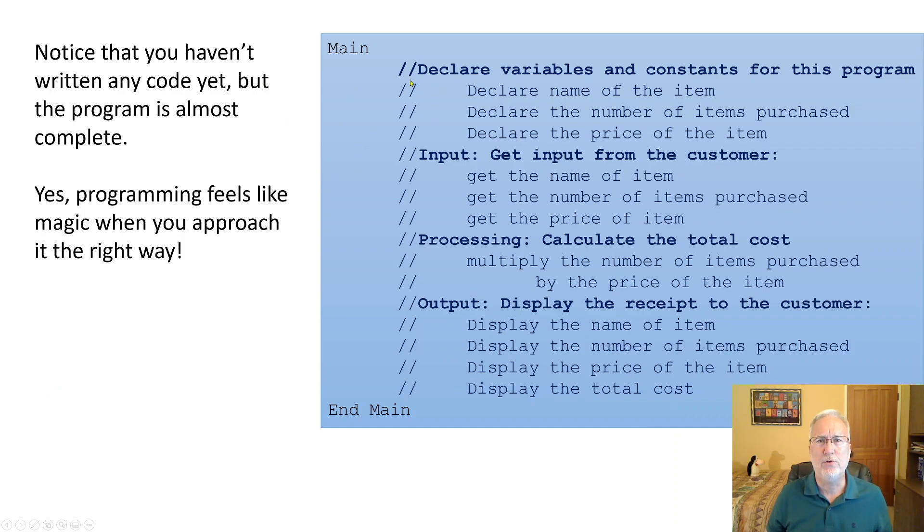Okay, so what do we have to do? We have to declare the variables. We said that already. So here's the variables, and we're getting three values from the user: the name of the item, the number of items purchased, the price of the item. Notice none of this is code yet. We're just kind of saying, this is what has to happen.